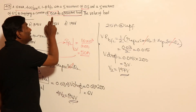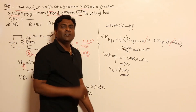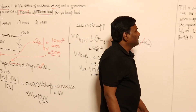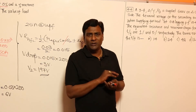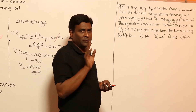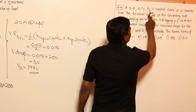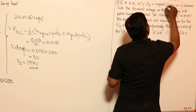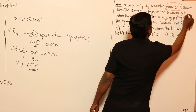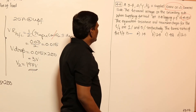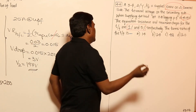Let us look at one more question. This is a three-phase transformer — we need not worry about three-phase versus single-phase because everything will be on a per-phase basis. It is a three-phase star-delta transformer: 6000 volts on the delta side. The terminal voltage on the secondary side when supplying full load at 0.8 power factor lagging is 415 volts. Equivalent resistance and reactance drops are 1% and 5% respectively. The question asks for the turns ratio.